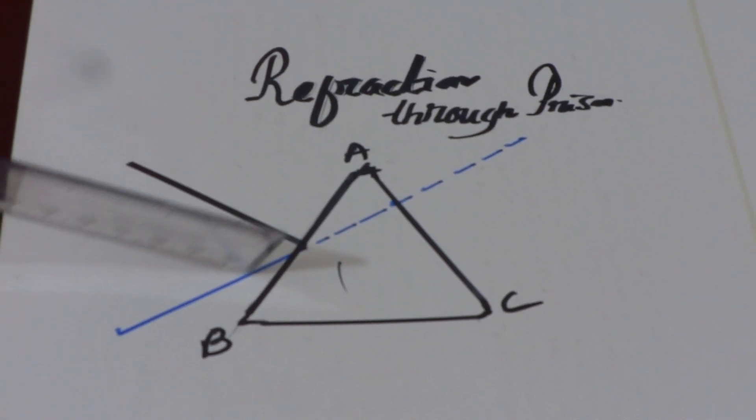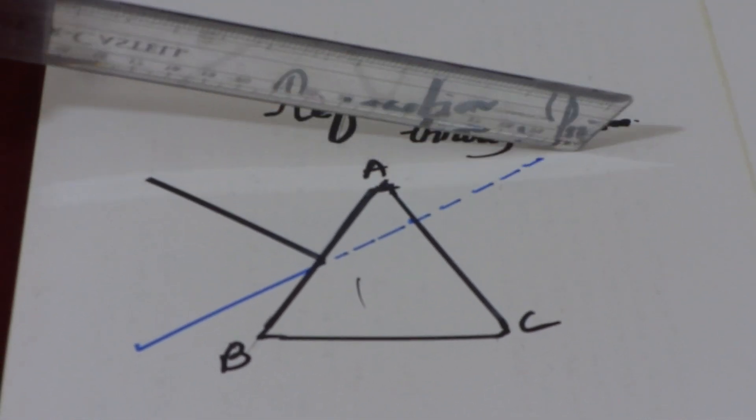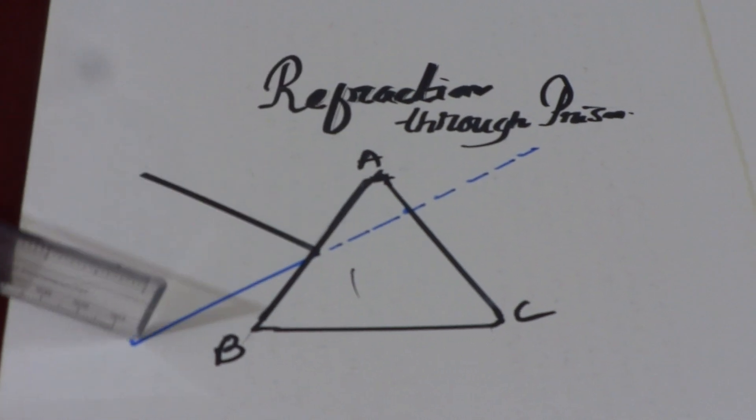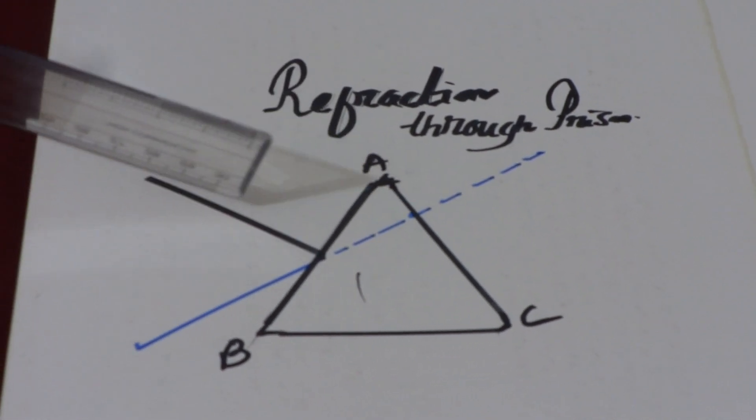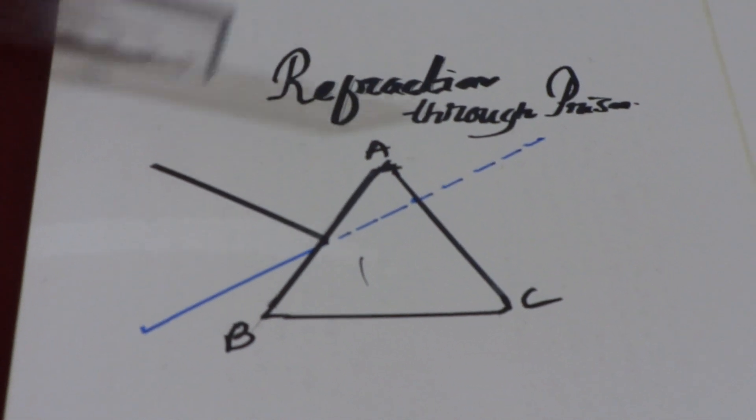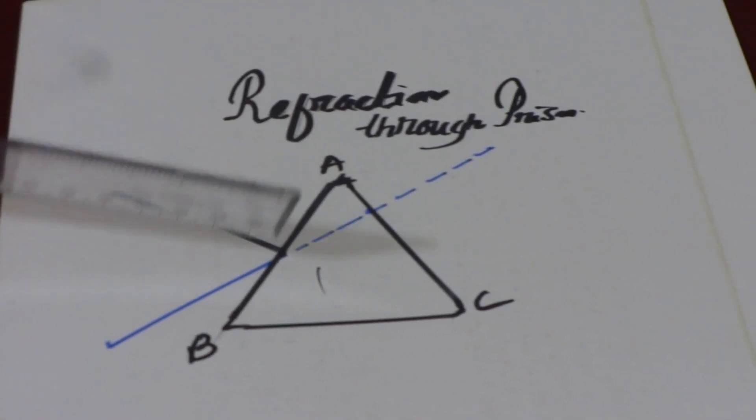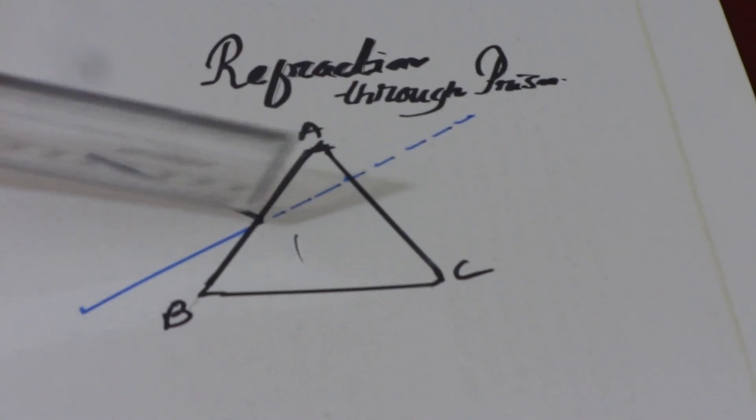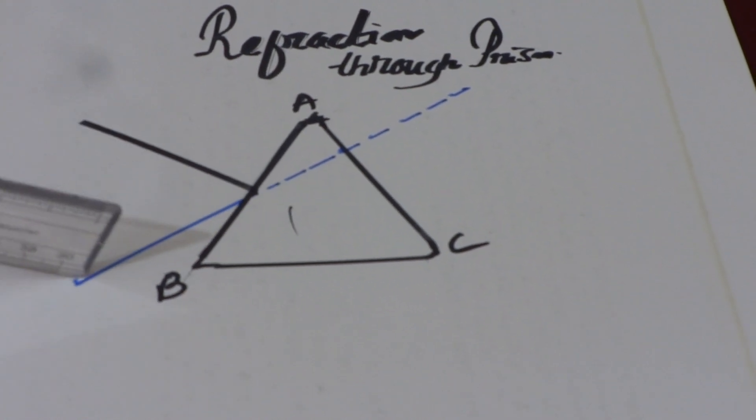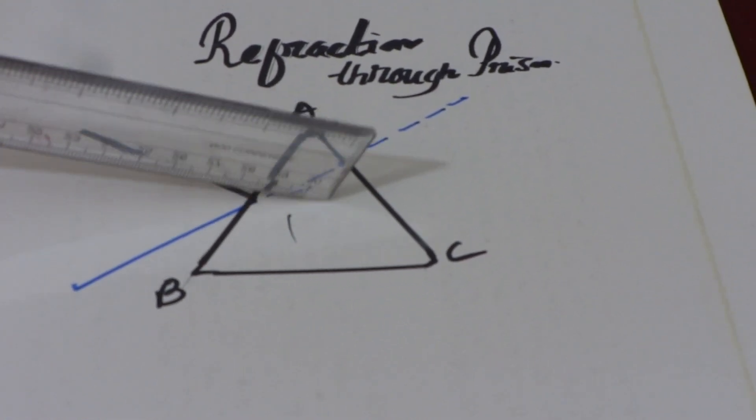Now, if you send the incident ray, the incident ray will pass in this direction. This blue line is representing the incident ray. This black line is normal. Now, what happens?